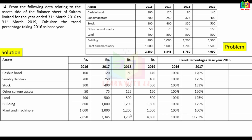For 2018: 80 divided by 100, 325 divided by 200, 350 divided by 300, 125 divided by 50, 500 divided by 400, 1200 divided by 800, 1200 divided by 1000, 3780 divided by 2850. That gives us 90, 140 divided by 100, 400 divided by 200. That's why we change the percentage.